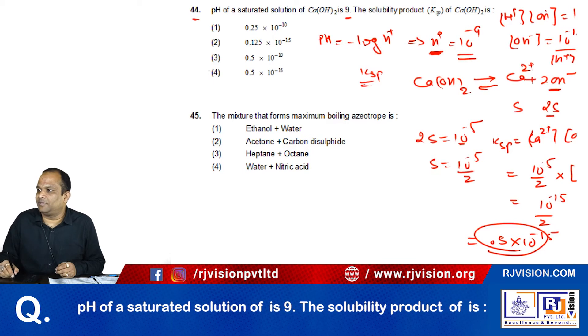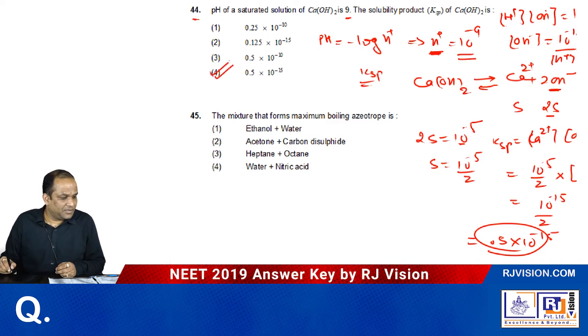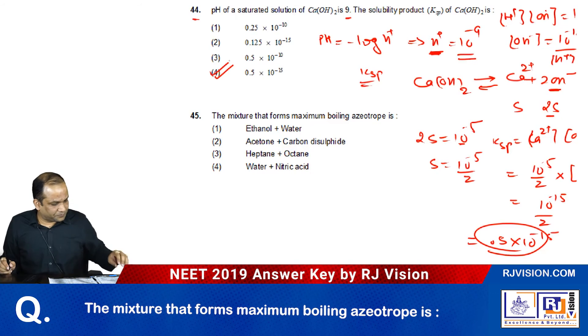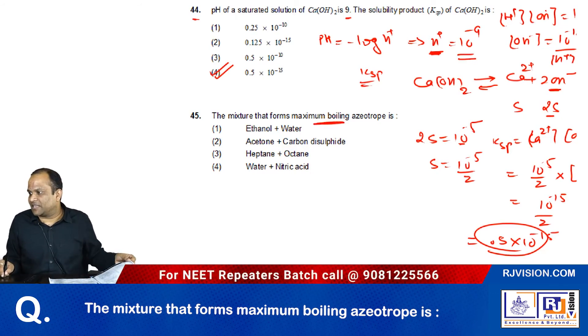According to this, the answer is fourth. Now for the next question: which mixture forms a maximum boiling azeotrope?